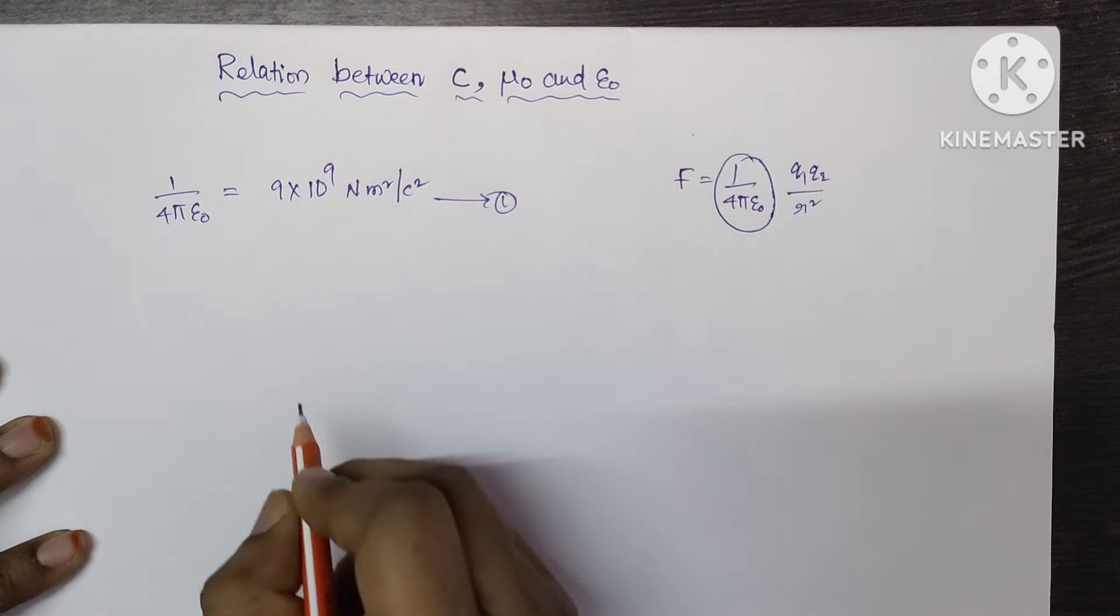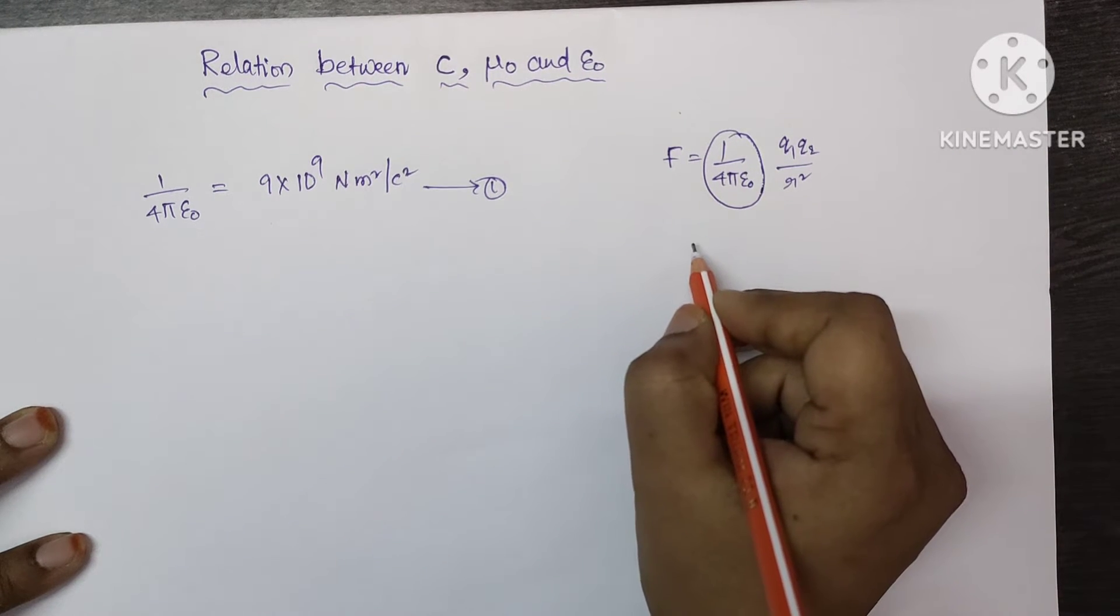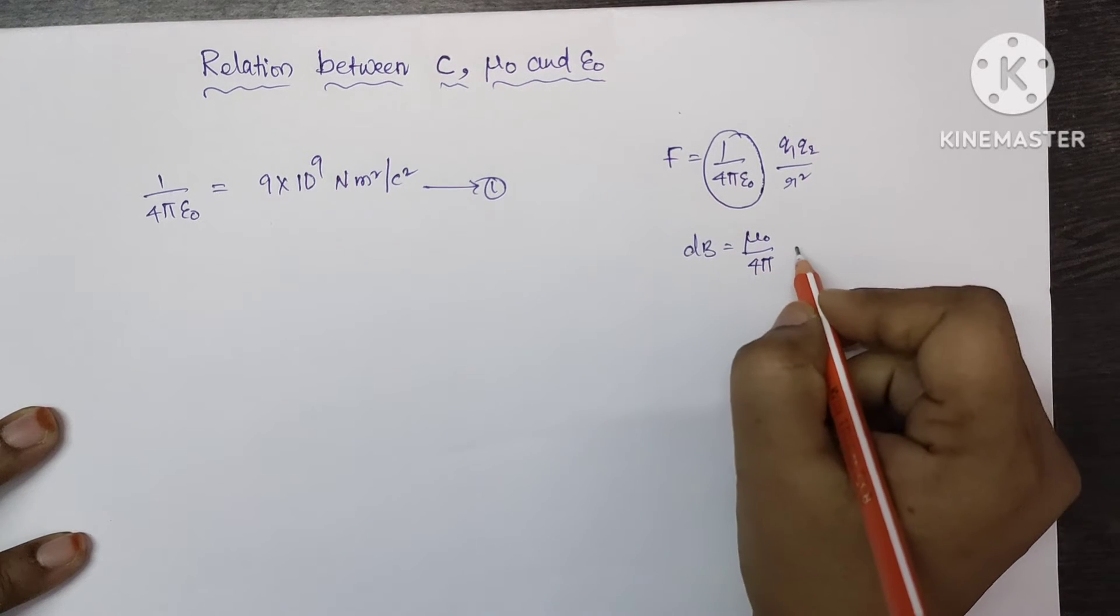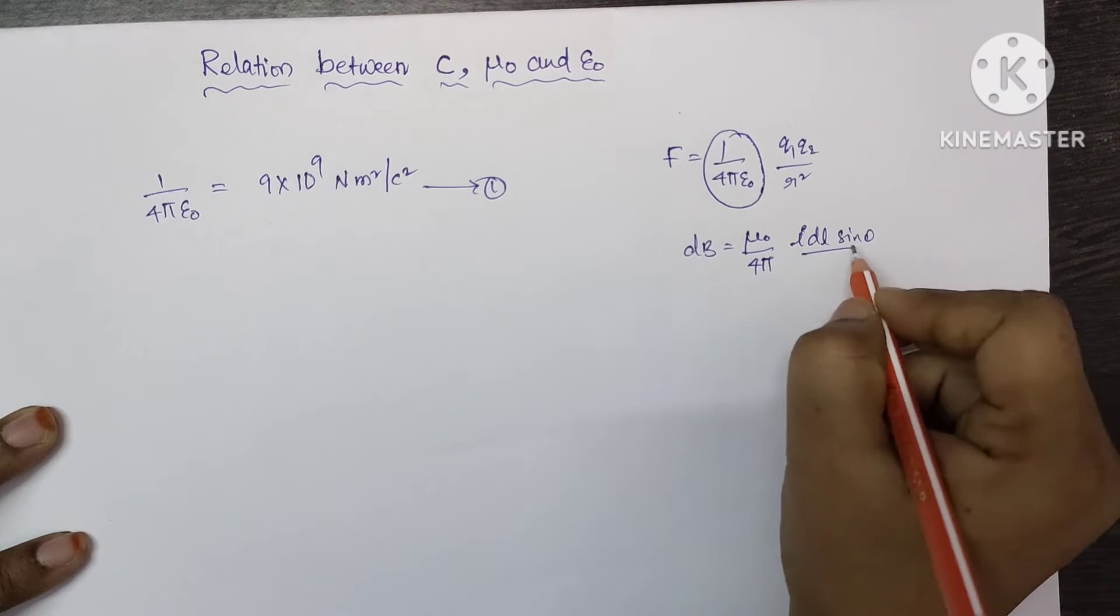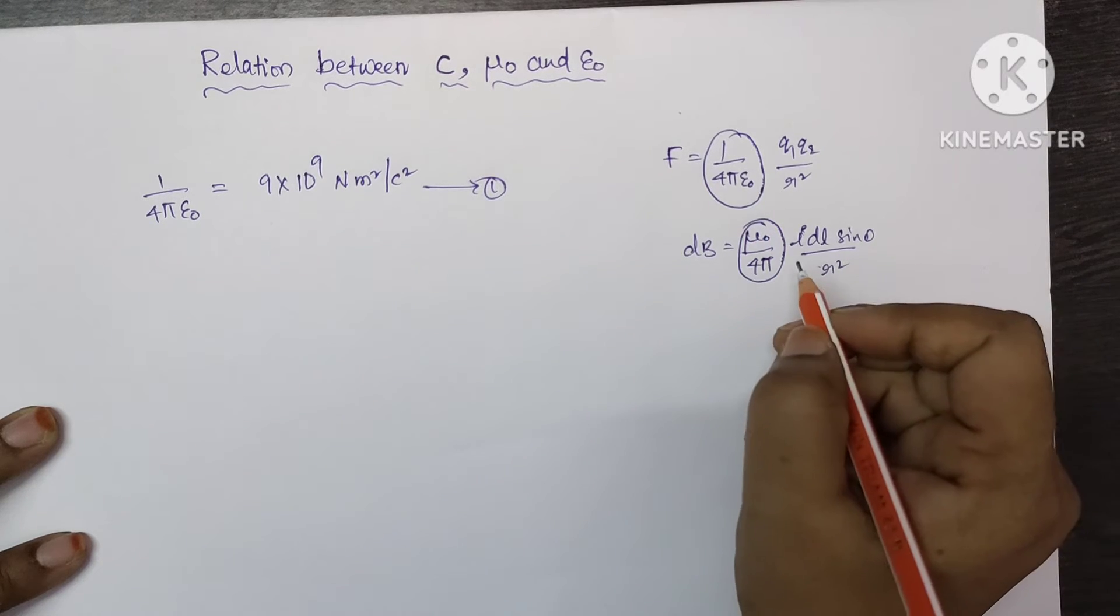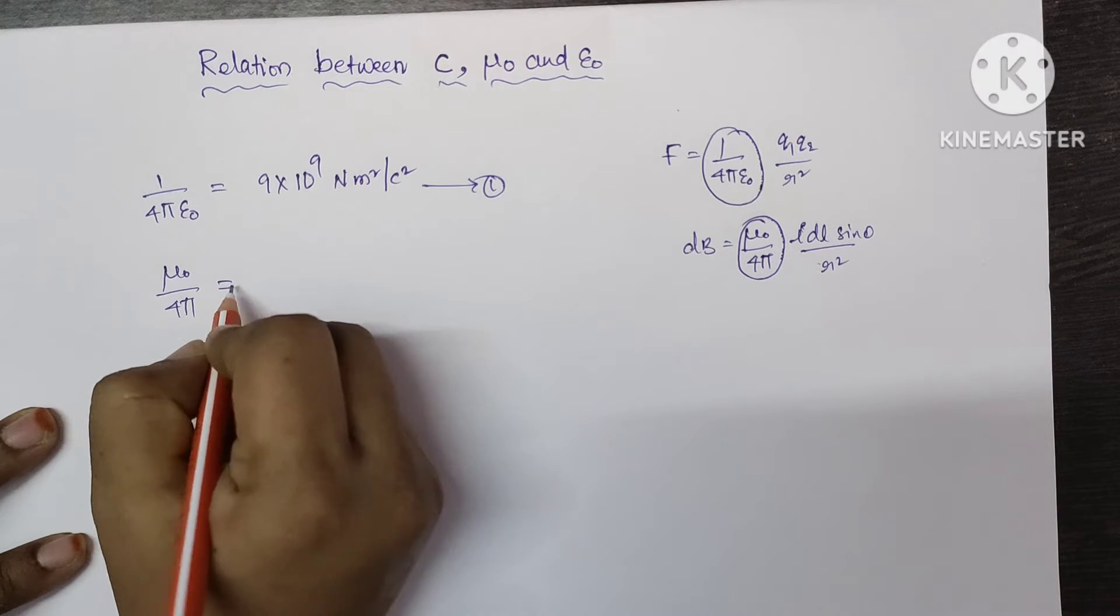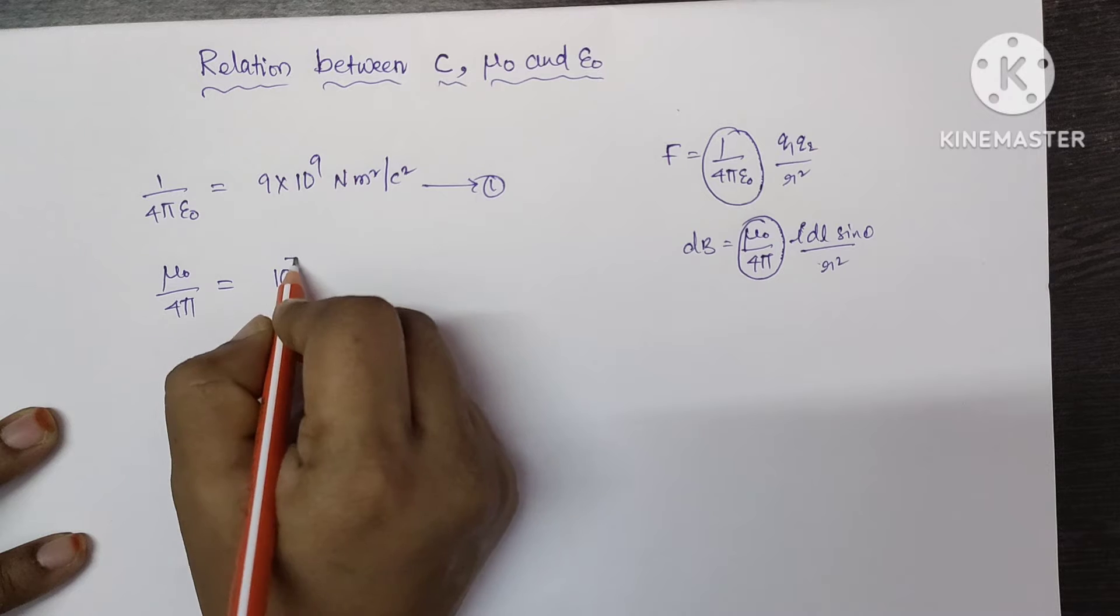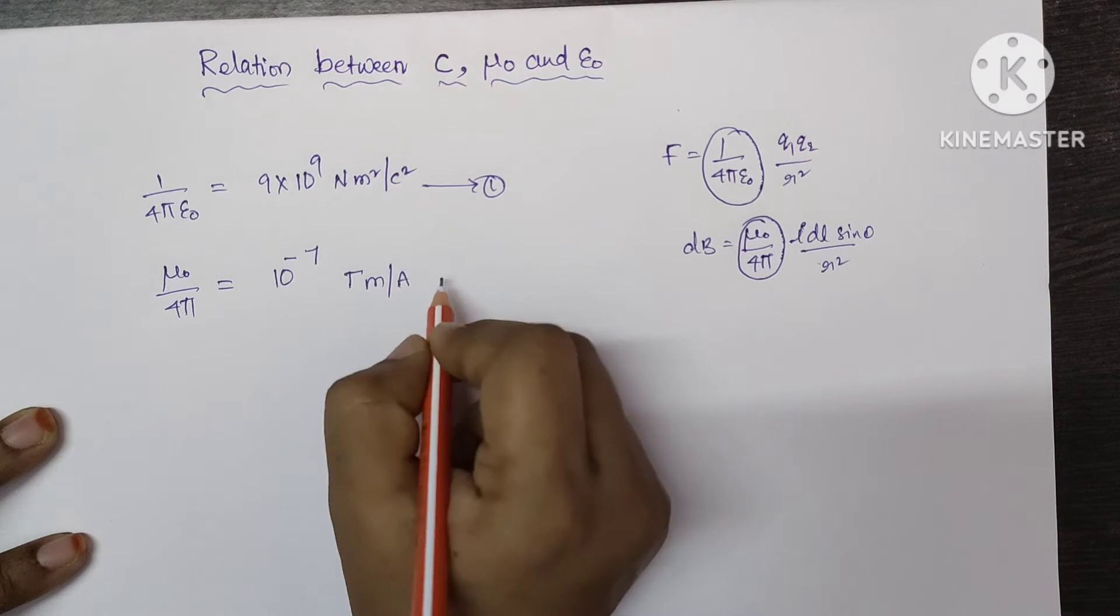Let it be equation number 1 and also from magnetism we know that from Biot-Savart's law dB equal to mu 0 by 4 pi into idl sin theta by r square. So here also mu 0 by 4 pi is a constant. Let us take the value of mu 0 by 4 pi which is equal to 10 to the power of minus 7 tesla meter per ampere.